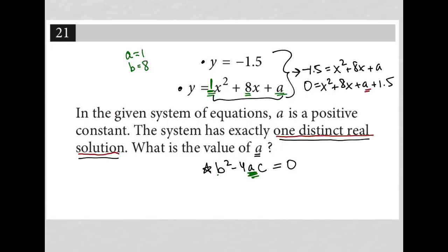And then c, in fact, I should look over here. So a is one, b is eight. And c is actually going to be all of this, right? Because a is a constant. We're adding 1.5 to it. So it's going to be all of that. So c is equal to a plus 1.5.